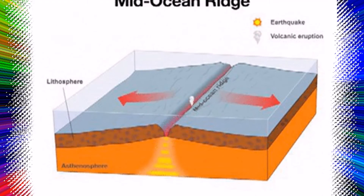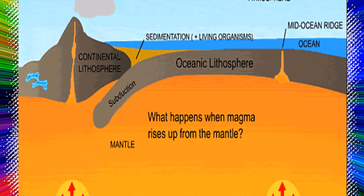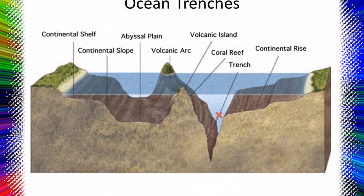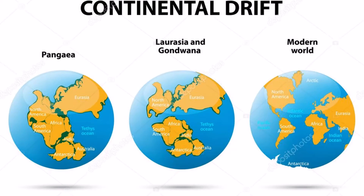Systematic measurements of ocean depth conducted during the middle of the 20th century produced three-dimensional relief maps that revealed broad, relatively elevated oceanic ridges forming an interconnected network about 65,000 kilometers (40,000 miles) in length that nearly girdles the globe. Ocean ridges have elevations that typically rise 2 to 3 kilometers (1.2 to 1.9 miles) above the surrounding seafloor and widths ranging from a few hundred to more than 1,000 kilometers. Their crests tend to be rugged and are often indented with a rift valley at their summit, where fresh lava, high heat flow, and shallow earthquakes typical of extensional environments — areas where the crust is stretched rather than compressed — are found.